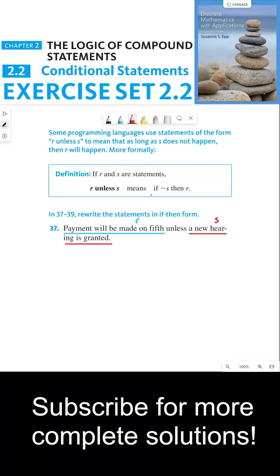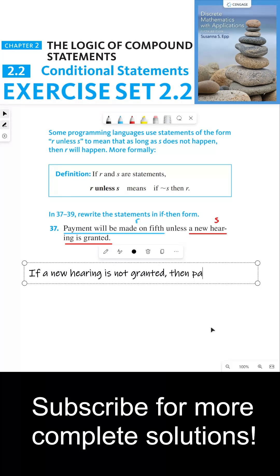So now we can see that this is the same thing as if not S, then R. So we have to write that English statement. We would say if a new hearing is not granted, then payment will be made on fifth. Thanks everyone, and I'll see you in the next video.